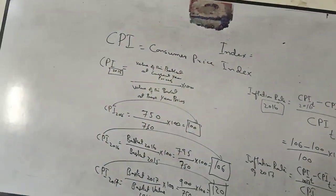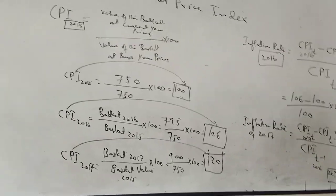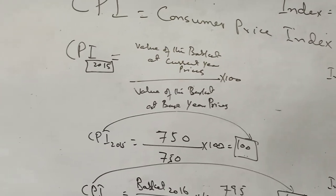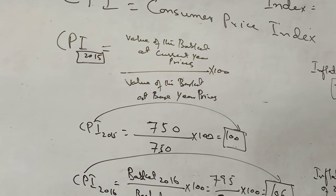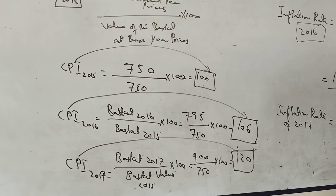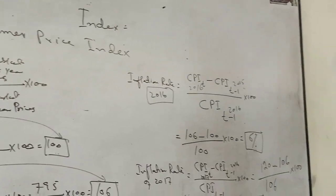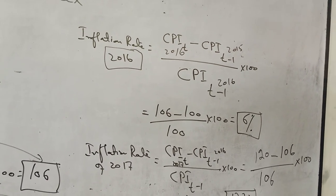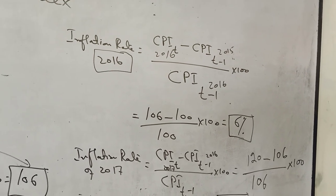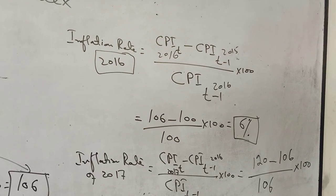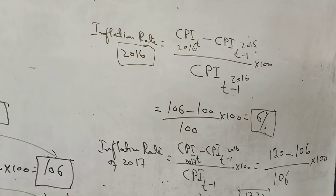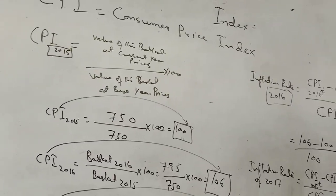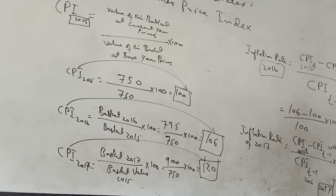To recap: the CPI is the Consumer Price Index = value of basket at current year prices ÷ value of basket at base year prices × 100. For the inflation rate formula: Inflation Rate = (CPI_t − CPI_{t−1}) ÷ CPI_{t−1} × 100, where CPI_t is the current year and CPI_{t−1} is one year back. Using these formulas we are able to calculate how much prices have changed. Thank you very much for watching this video.